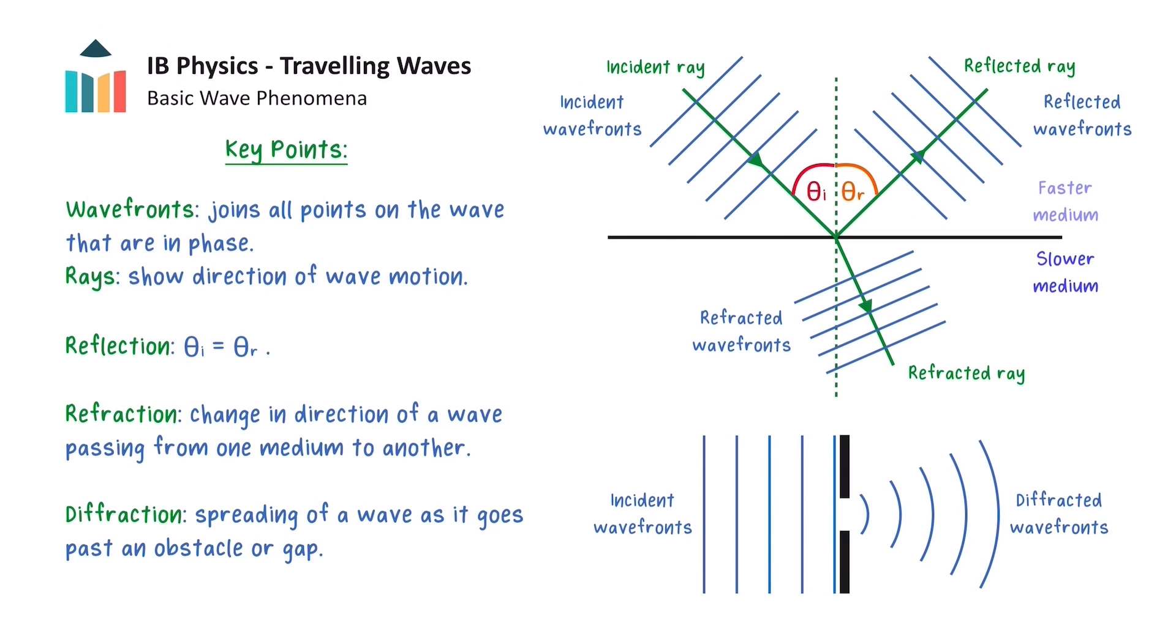Waves can also be refracted at the boundary between two media, where the amount and direction of refraction depends on the differences between the speeds of the two media. Finally, we showed that waves can be diffracted, changing direction when they go past an obstacle or gap. This now concludes our video about basic wave phenomena. Thank you for watching.